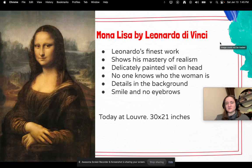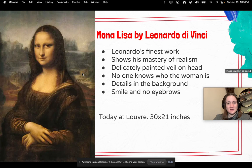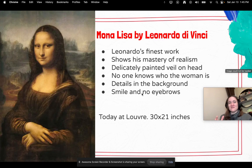It is considered Leonardo's finest work — it shows his mastery of realism. It has a very delicately painted veil on the woman's head. If you look really closely, you can see a black outline near the top of her head — there's actually a sheer veil painted over her face. No one knows who the woman is; there's some suspicion but no one really knows for sure. There are also a lot of details in the background — mountains, lakes, rivers, bridges, and a road.